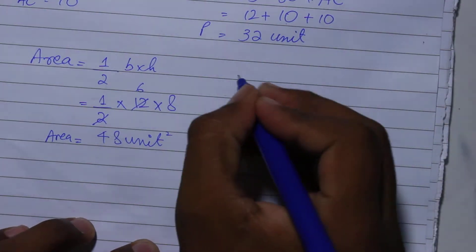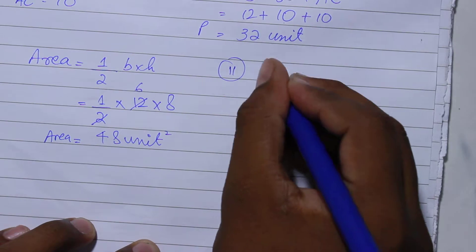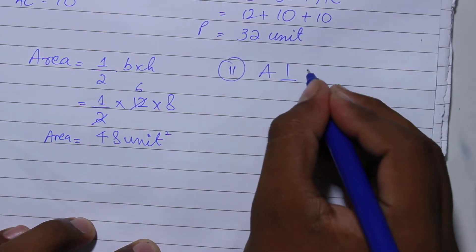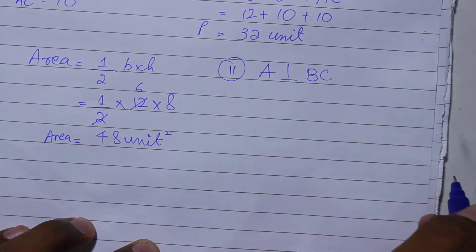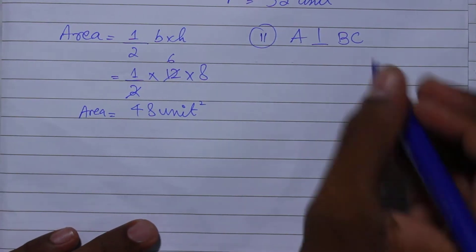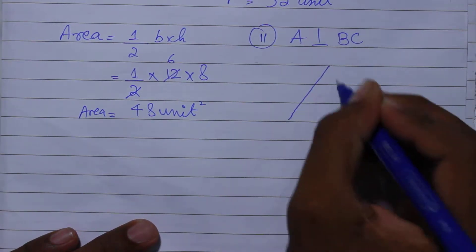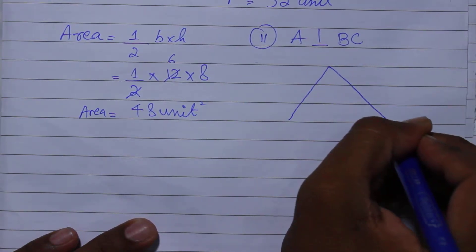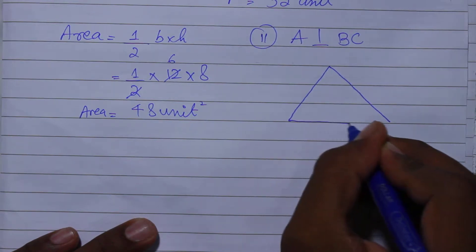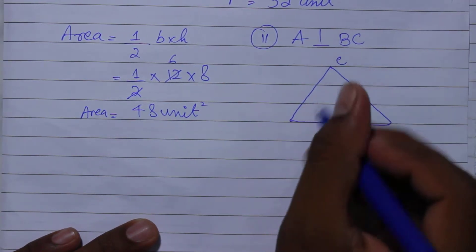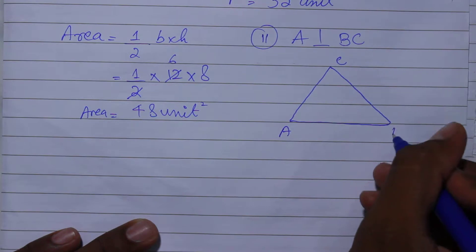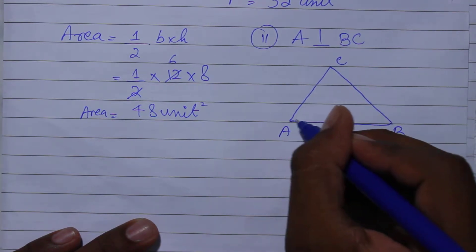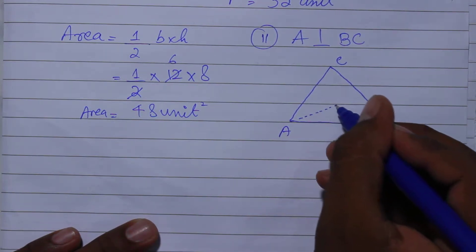Now for the second part, you have a perpendicular line to BC, so you have to know its distance. I have a triangle like this. I have to make the next video because the length of the first video was much higher, so I have to stop here.